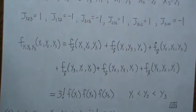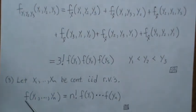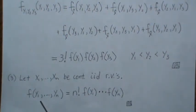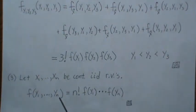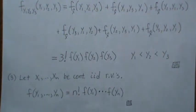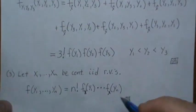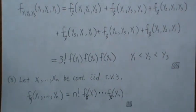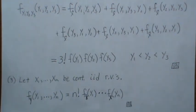To expand this to a general sample size of n with continuous IID random variables, the joint PDF of the order statistics y1 through yn is n! times the product of the individual densities f(yi), valid over the region y1 < y2 < … < yn. That's all for today — hopefully you enjoyed it. If you did, please like and subscribe so you don't miss the next one. Thanks, bye.